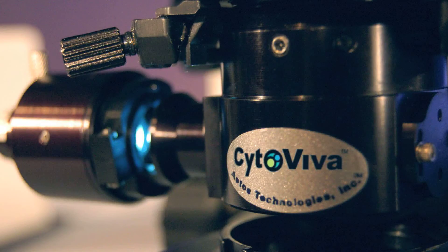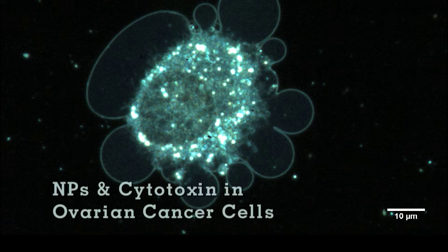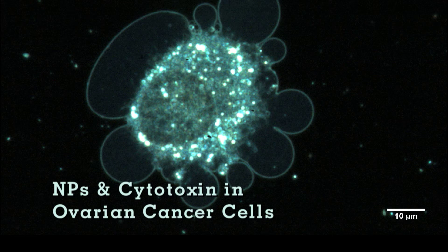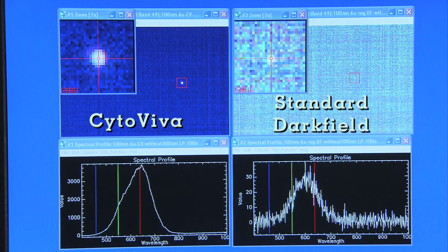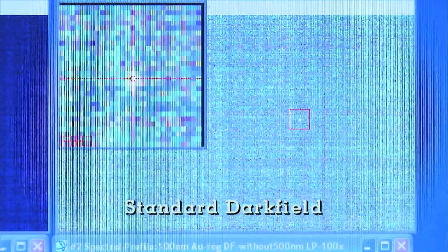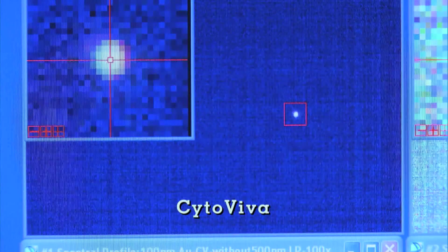CytoViva's high signal-to-noise optical illumination system replaces the standard condenser on a research-grade microscope. This system serves to perfect the alignment and focus of oblique angle illumination, also known as darkfield. The signal-to-noise enhancement improves detection as much as 80 times compared to standard darkfield microscopy.